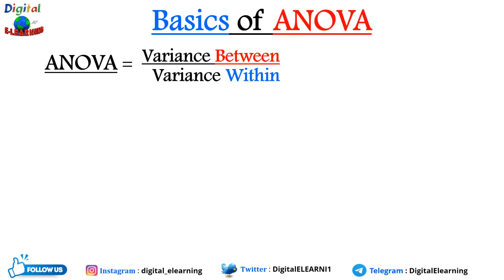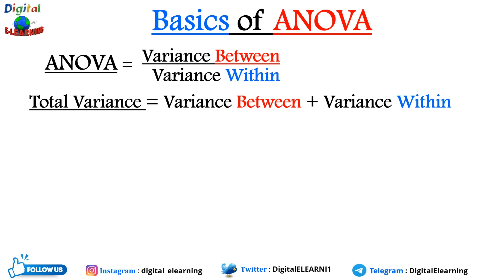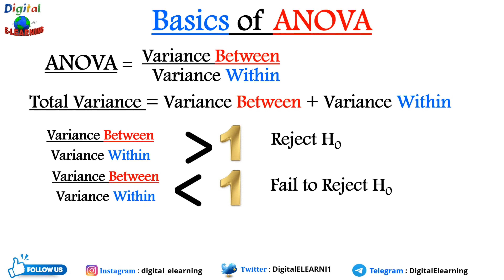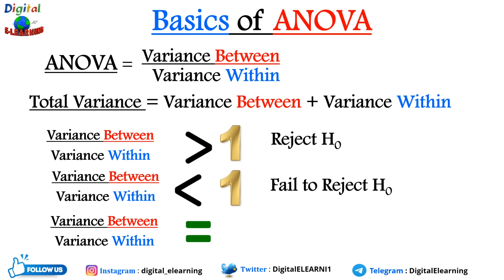ANOVA is basically a ratio of variance between divided by variance within. The total variance is the sum of variance between plus variance within. If the variance between / variance within ratio is greater than or equal to 1, we reject the null hypothesis; if it is less than 1, we fail to reject it. If between-group variation is high relative to within-group variation, the F-statistic will be higher and the corresponding p-value will be lower, making it more likely we reject the null hypothesis.